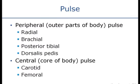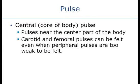The most common pulses we're going to check are the carotid in the neck or the radial in the wrist. The brachial is on the inside of the arm, the posterior tibial is behind the leg, the dorsalis pedis is on top of the foot, and the femoral artery is located in the groin.